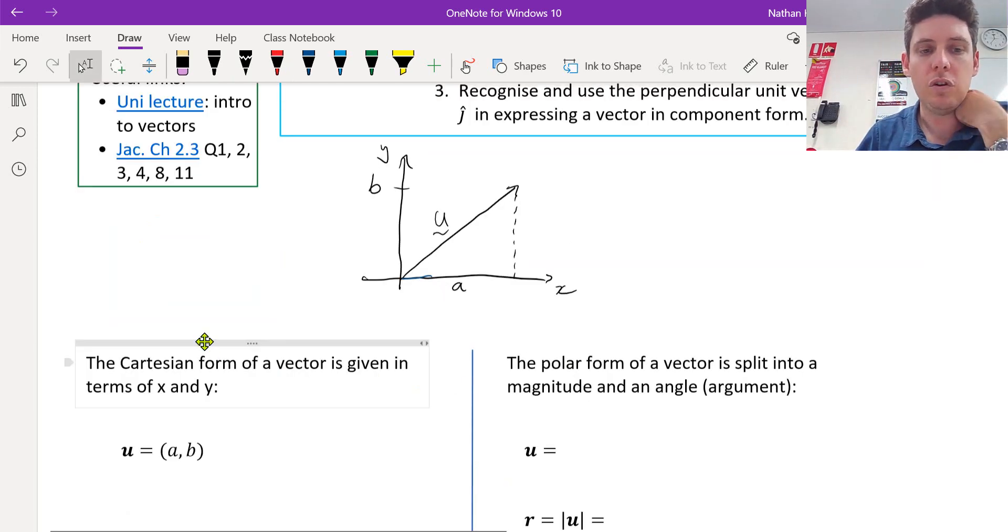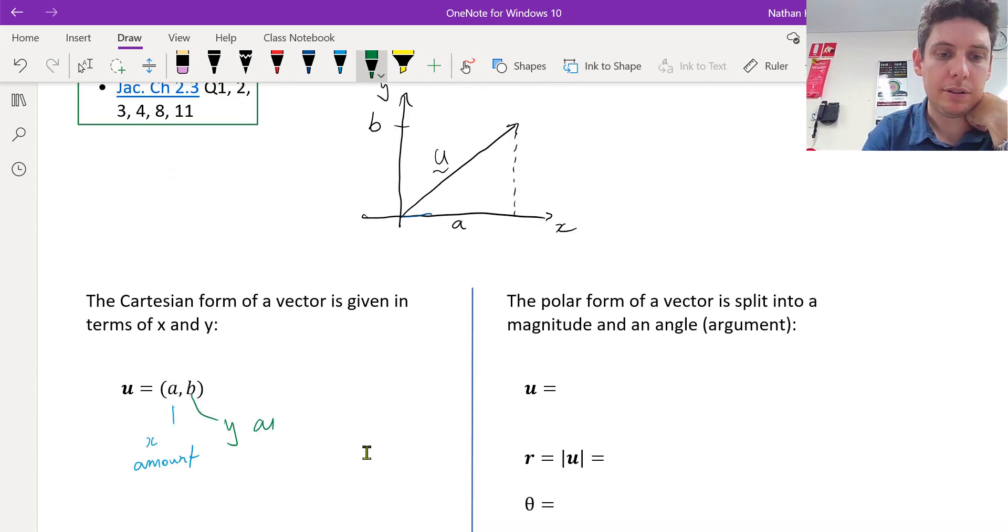This is the first form of u, the Cartesian form. And we write u equals bracket a comma b. That's the Cartesian form, an x and y amount for u.